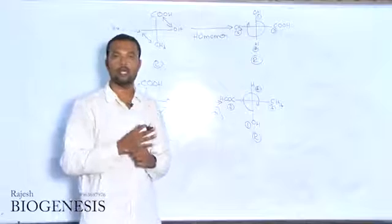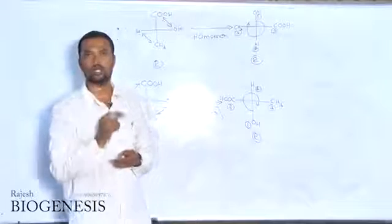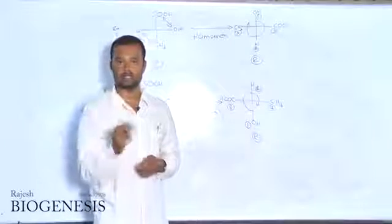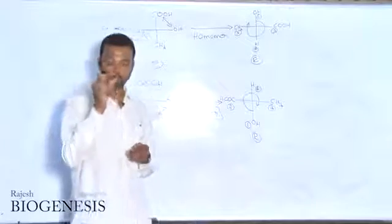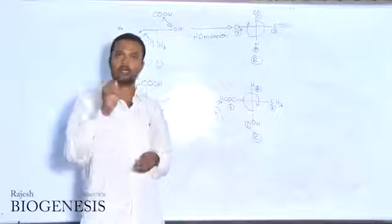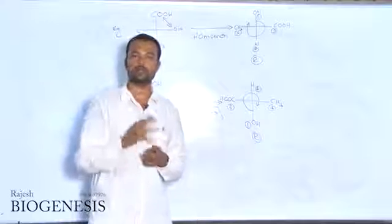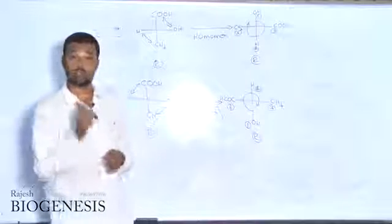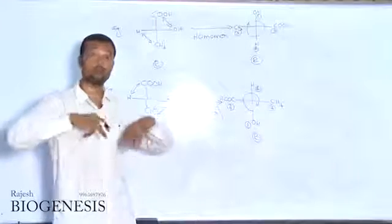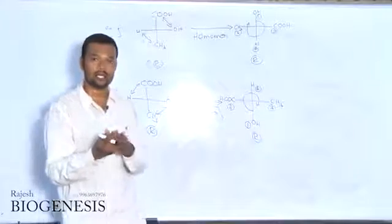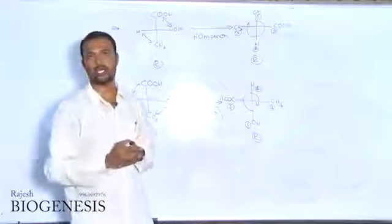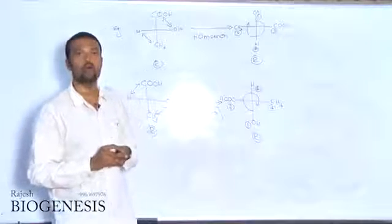In Fischer projection, one of the best ways to identify enantiomers, diastereomers, and homomers: every 90° rotation gives an enantiomer; every 180° rotation gives a homomer; every two-group exchange with one chiral center gives an enantiomer; every two-group exchange with more than one chiral center gives a diastereomer; and every three-group exchange and mutual exchange gives a homomer.